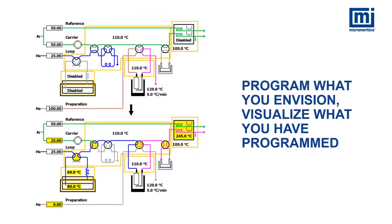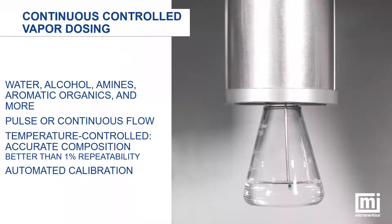Memorizing flow paths, valve orientations, and locations is no longer required when programming an experiment. This process is now illustrated by showing the state of the instrument at every step of the method, highlighting the differences from one step to the next. The vapor generator adds additional functionality with the ability to use liquids such as water, alcohol, amines, and more. In addition to vapor being pulsed over the sample, it can now be flowed continuously, allowing for an even faster analysis.